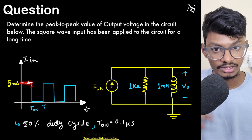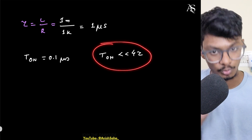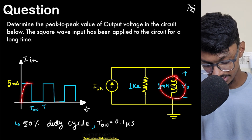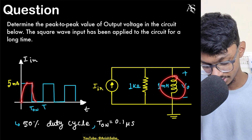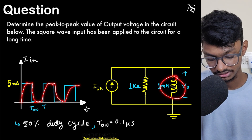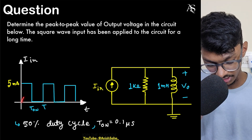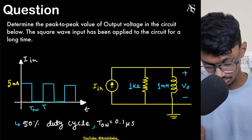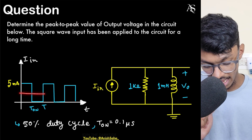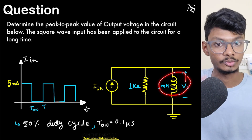If 5 milliamperes is applied for a sufficient time, the inductor reaches steady state, and the current becomes 5 mA. When the input drops to zero, the inductor discharges slowly, then charges again — the waveform would look like that. In our case, T_on is too short, so the inductor will only partially charge, then discharge, then charge again. At steady state, the current through the inductor will be constant and the voltage will oscillate between peak values in a triangular fashion.